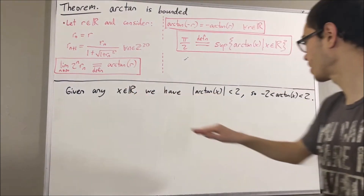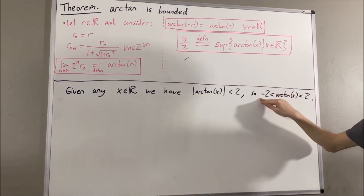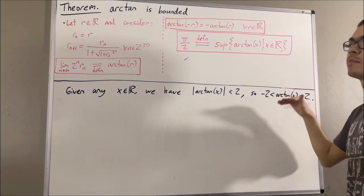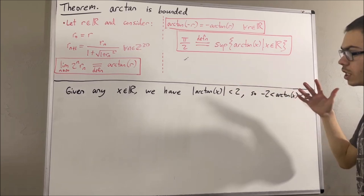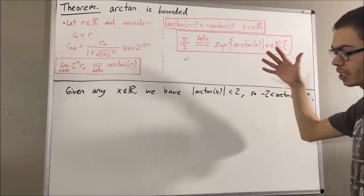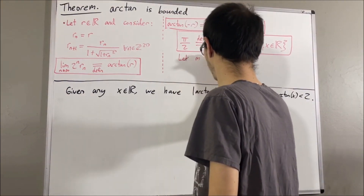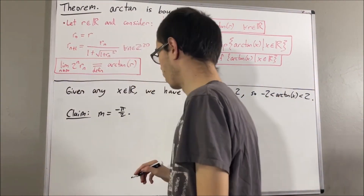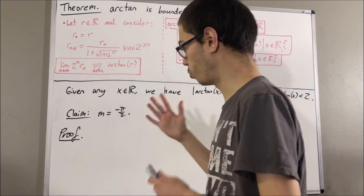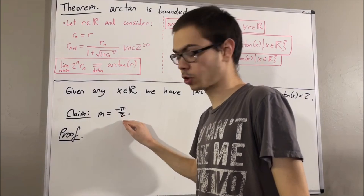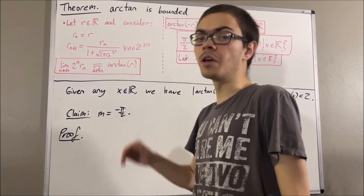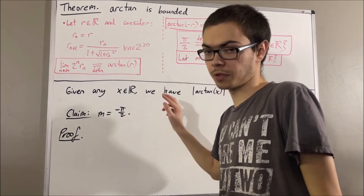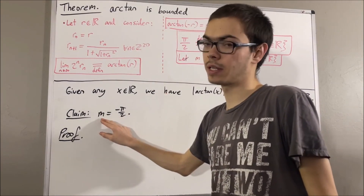We also see that given any real number x, the arctangent of x is greater than negative 2, so negative 2 is a lower bound of the arctangent function. Because the arctangent function has a lower bound, it must have a greatest lower bound. We will denote the greatest lower bound of the arctangent function by the letter m. The claim is that m is equal to negative pi over 2. To prove this, we're essentially going to prove that m is less than or equal to negative pi over 2 and m is greater than or equal to negative pi over 2, by showing that negative pi over 2 is a lower bound and that negative m is an upper bound of the arctangent function.